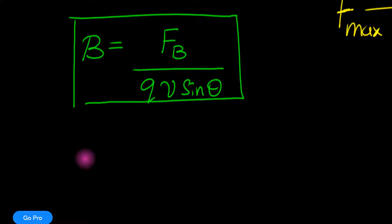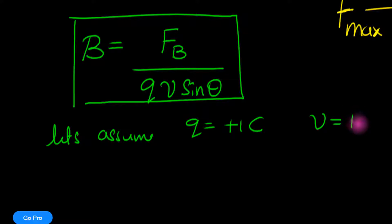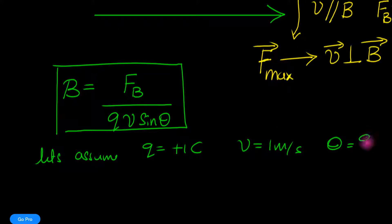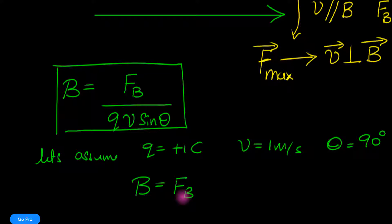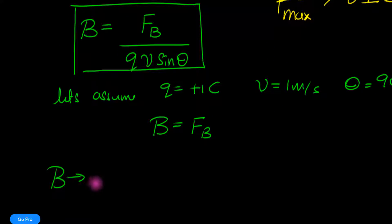To understand it intuitively, let's set q equal to plus 1 coulomb, v equal to 1 meter per second, and theta equal to 90 degrees. The denominator then becomes 1, and therefore B equals F_B. This tells us that the magnetic field B is the force per unit positive charge moving at unit speed perpendicular to the field.